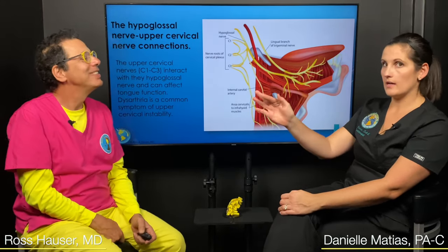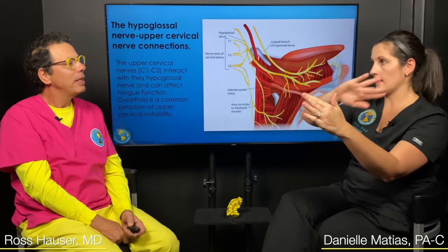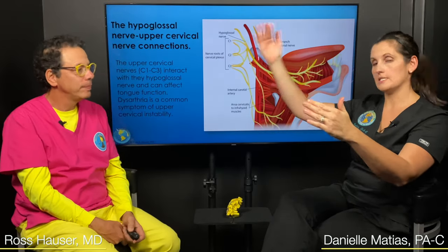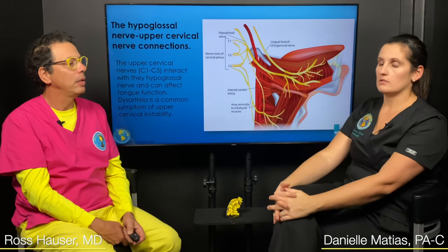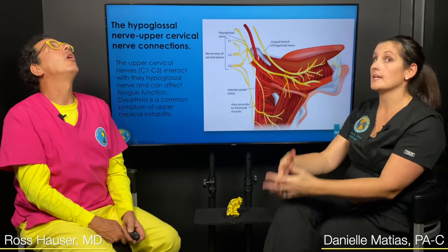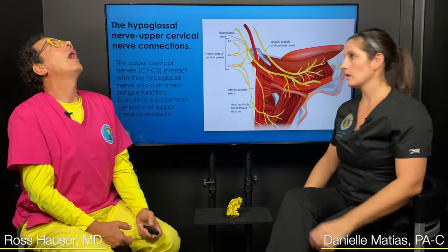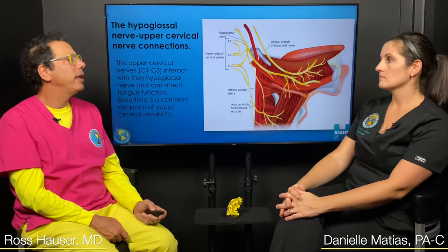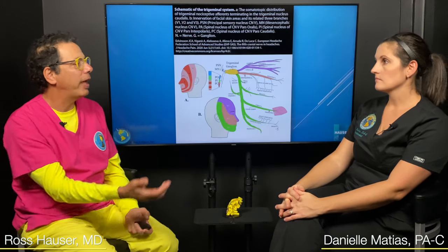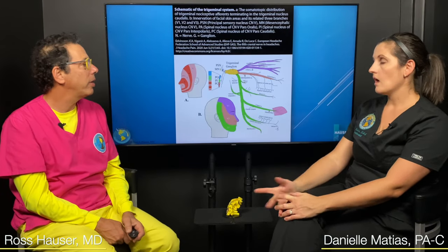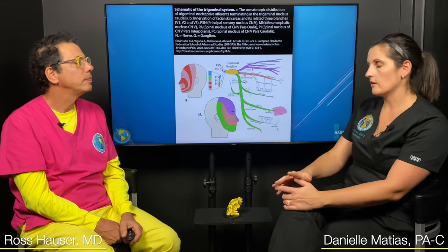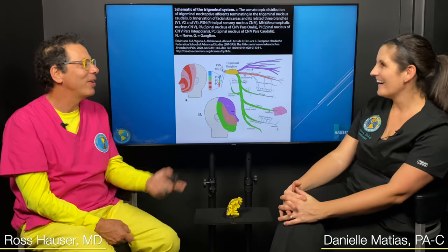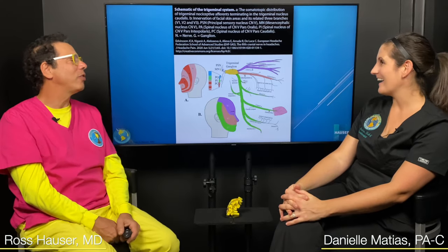Even at the hairdresser, a lot of times they have a big sink with that hard divot in it that doesn't always put the right kind of pressure on your C1, C2 — it's not designed that way. We've had patients where their problems started there. I've seen a number of those patients myself, and now whenever I go to the hairdresser, I wash my hair before I go — because you don't want to end up with upper cervical instability.